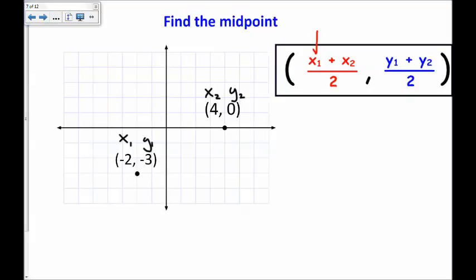First, x1 plus x2. x1 is here and x2 is here. So, negative 2 plus 4 over 2. Negative 2 plus 4 is positive 2 divided by 2 is 1.